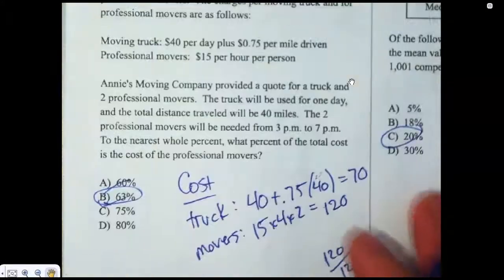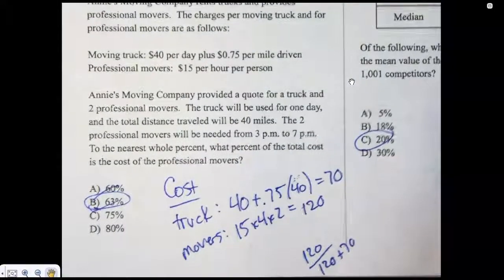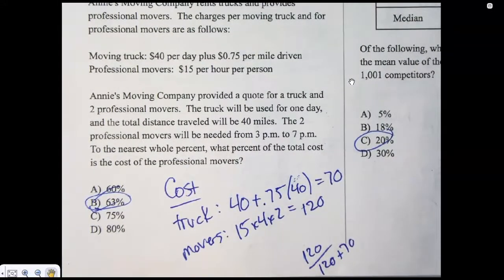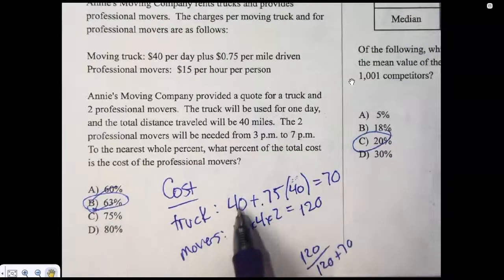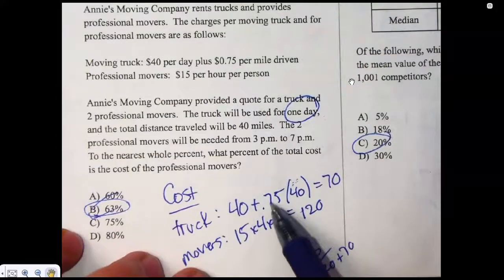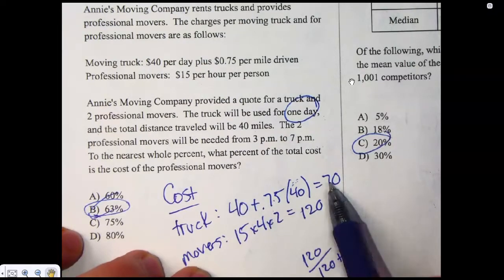Number eight, it's another one that I kind of battled with here. So they say, what percent of the total cost is the cost of the movers? So you got two costs here. The truck, which is $40 a day. And you're only having this truck for one day. Plus 75 per mile driven. They're going to drive 40 miles. So figure all that out. The truck costs 70 bucks.